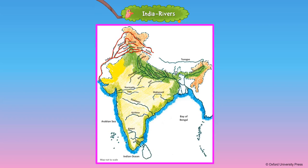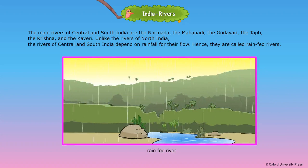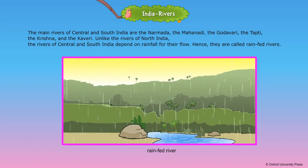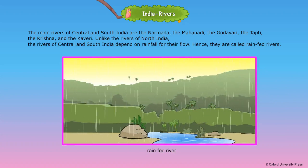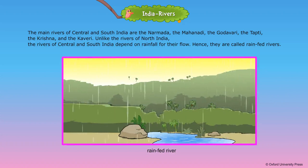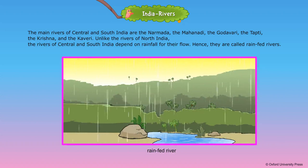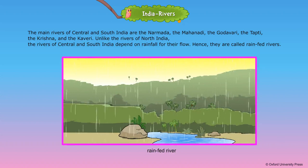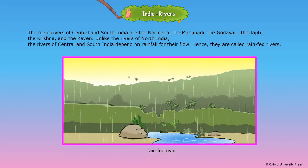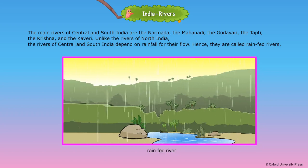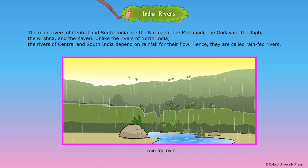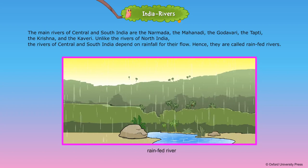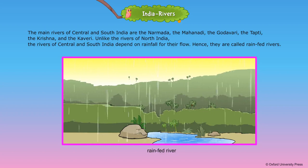The main rivers of Central and South India are the Narmada, the Mahanadi, the Godavari, the Tapti, the Krishna, and the Kaveri. Unlike the rivers of North India, the rivers of Central and South India depend on rainfall for their flow. Hence, they are called rain-fed rivers.